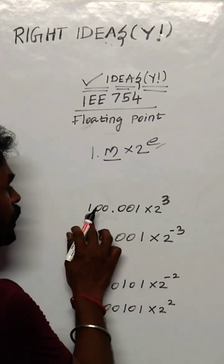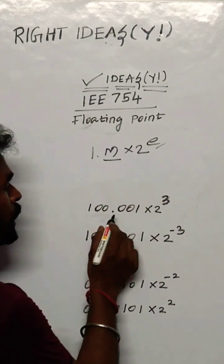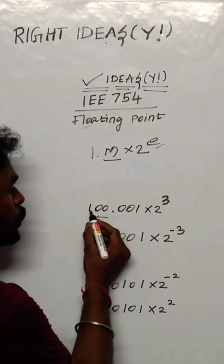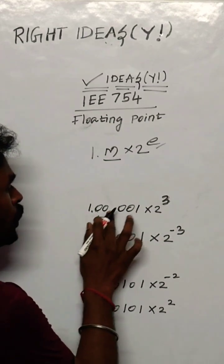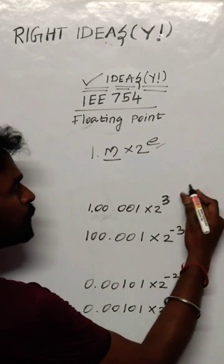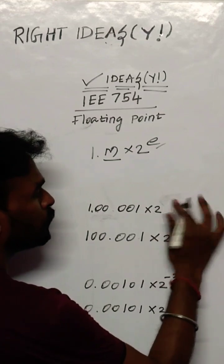The first one is 100.001. In our form 1.M, the decimal point moves left. How many points move? One, two - two points move. So 100.001 becomes 1.00001. Already 2^3, left move is plus 2, so the exponent is 5.